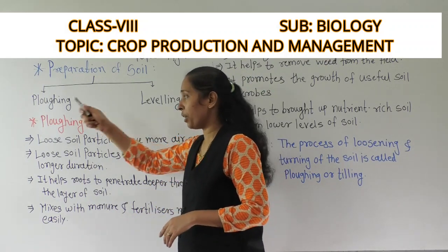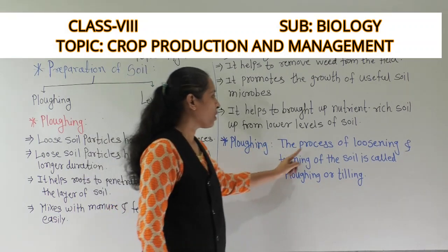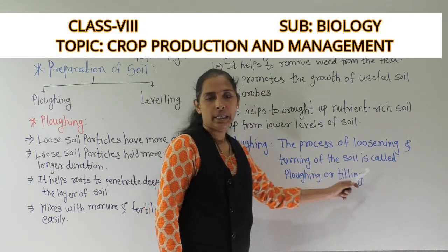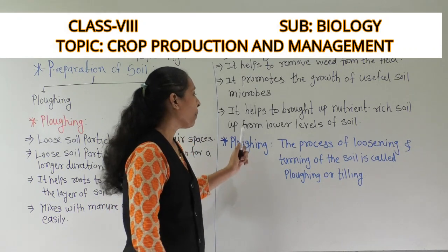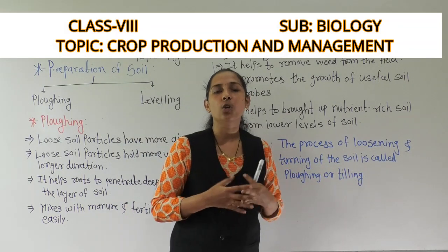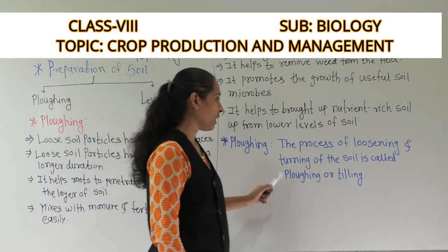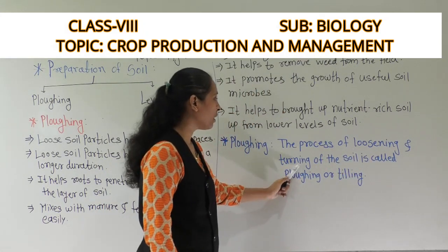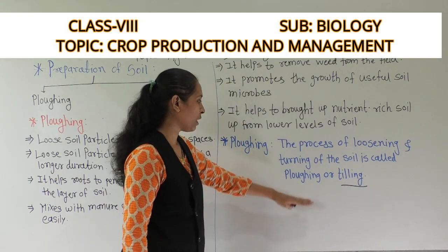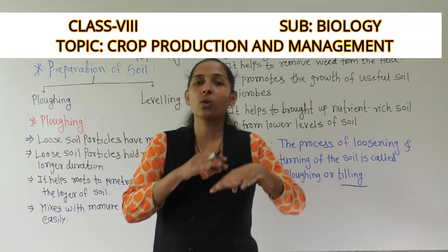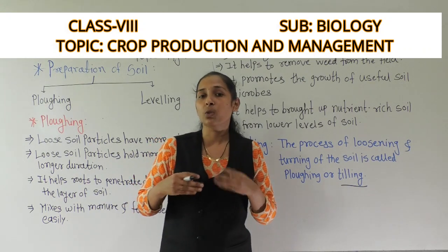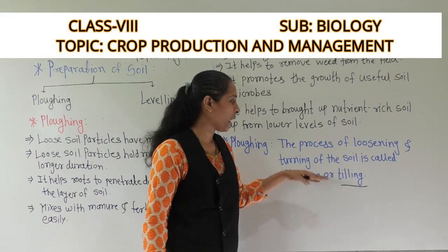Let's discuss the first process: plowing. The process of loosening and turning of the soil is called plowing, or it is also called tilling. So in plowing or tilling, we are loosening the soil and making it ready for the production or the sowing of seeds.